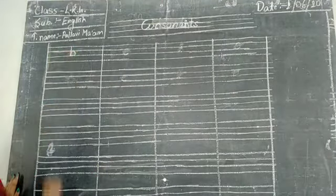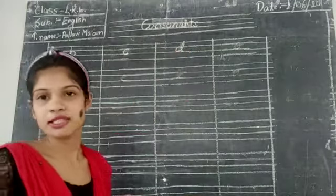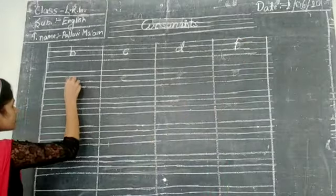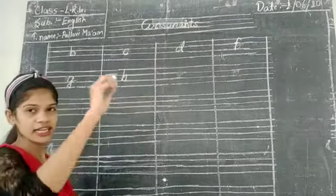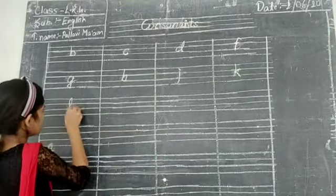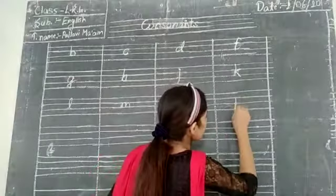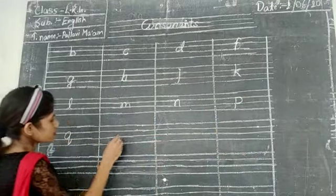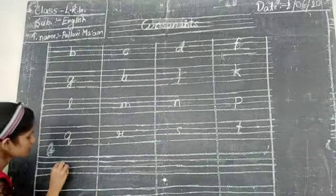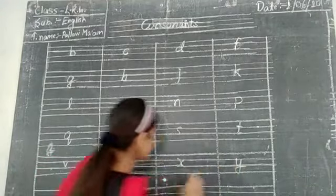We will write B, then C, then D. We will not write E because E is a vowel. Then F, G, H. We will not write I. Then J, K, L, M, N. We will not write O. Then P, Q, R, S, T. We will not write U. Then V, W, X, Y, Z.